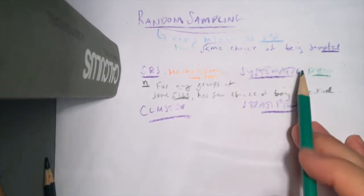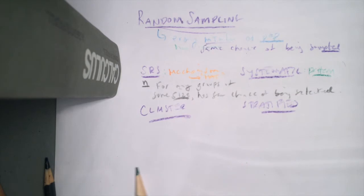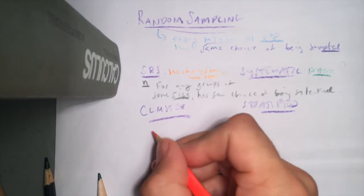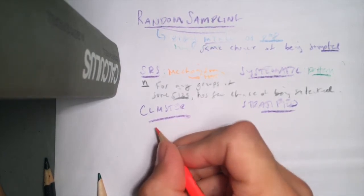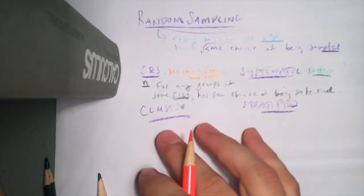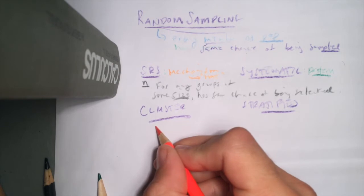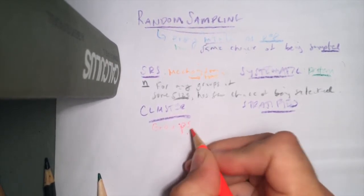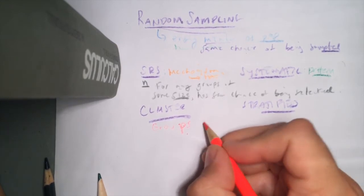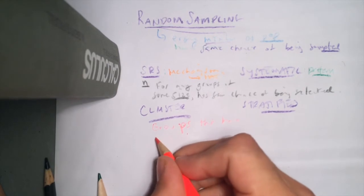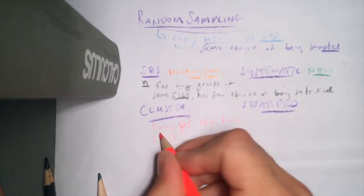Now let's move on to cluster versus stratified — what's the distinction? These are often confused. In both cluster and stratified sampling, the population is already broken up into groups. In cluster sampling, we have groups that have a similar variety.